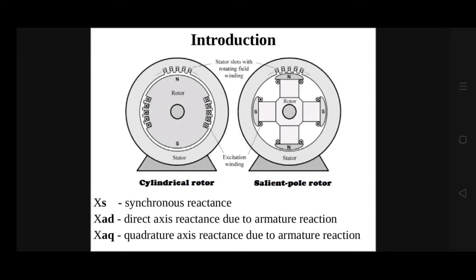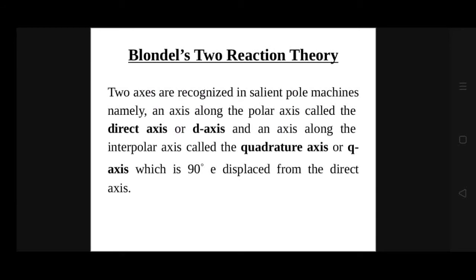These reactances are XAD, the direct axis reactance due to armature reaction, and XAQ, the quadrature axis reactance due to armature reaction. Consequently, the methods for finding voltage regulation of cylindrical rotor machines, when applied to salient pole machines, give incorrect results. In salient pole machines, regulation is found by applying Blondel's two reaction theory. According to this theory, two axes are recognized: the direct axis or D-axis along the polar axis, and the quadrature axis or Q-axis along the interpolar axis, which is 90 degrees electrically displaced from the direct axis.